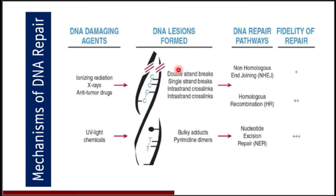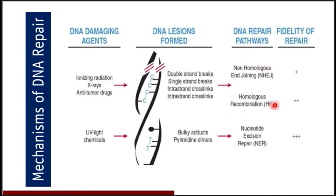Ionizing radiation, X-rays, and anti-tumor drugs also lead to intra-strand and inter-strand cross-linkages. These damages can be corrected by non-homologous end joining and homologous recombination repair. However, homologous recombination repair shows high fidelity in the repair process — it is the high-fidelity repair system for these damages.